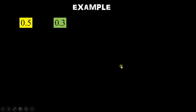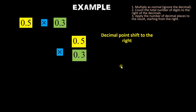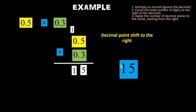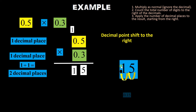Saan pa tayong example: 0.5 times 0.3. Again, multiply as normal, ignore the decimal. 3 times 5 — ang sagot natin ay 15. Ngayon, dito sa 15, kailangan mabilang natin yung decimal. Count the total number of digits to the right of the decimal: sa una isa, sa pangalawa isa — 1 plus 1 is 2, kaya 2 decimal places. Dalawa ang imove natin dito sa 15 — isa, dalawa. Kaya ang sagot natin is 0.15.